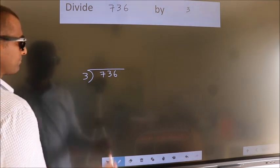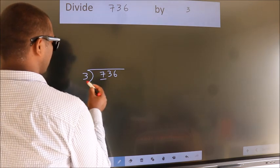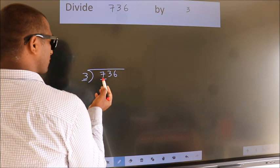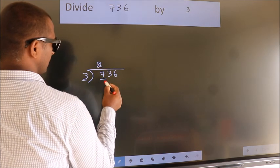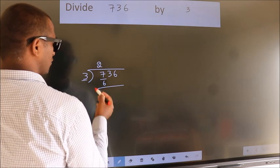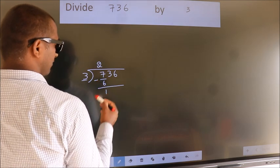Next, here we have 7, here 3. A number close to 7 in 3 table is 3 2's 6. Now we should subtract. We get 1.